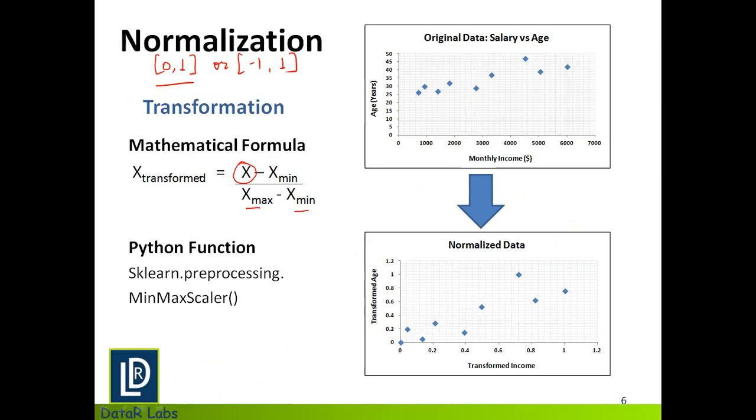So if I have to look at it in terms of a figure, how does that happen? I have converted both income and age, and I have represented it as a scatter plot for the original data and then for the transformed data. So if you look at the data distribution, first of all, the data distribution in both the cases look very much similar.